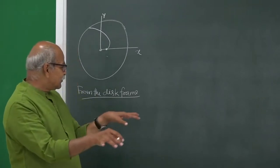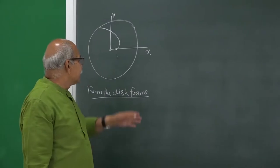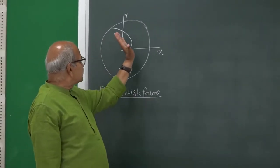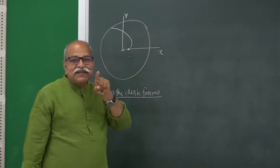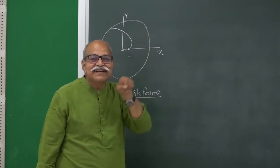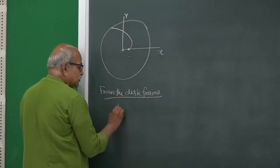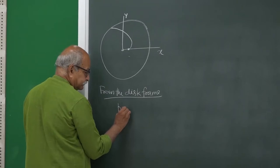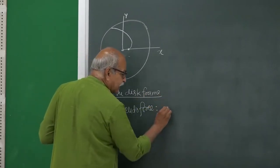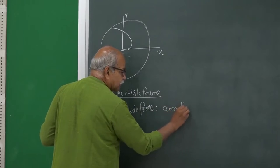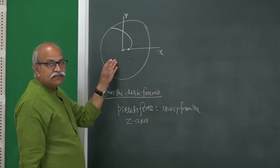We are looking for those pseudo forces which will allow us to use Newton's first, second, and third laws. There is some force which is pushing the particle away from the z-axis. The increasing distance from the z-axis is not always due to a radial force — you can have radial acceleration zero — but at least in this case it seems there is a force away from the axis of rotation of the disk frame with respect to the lab.